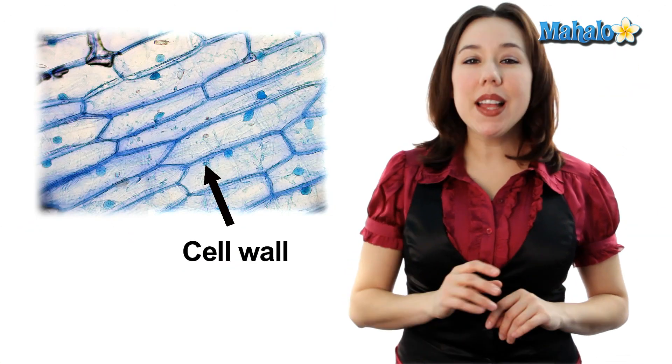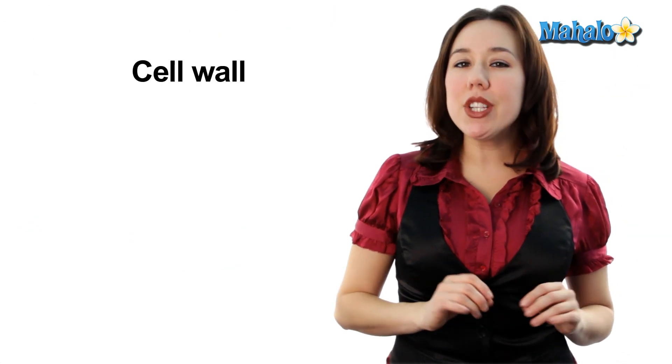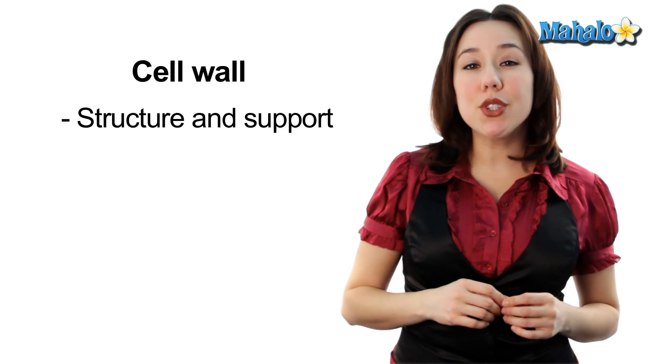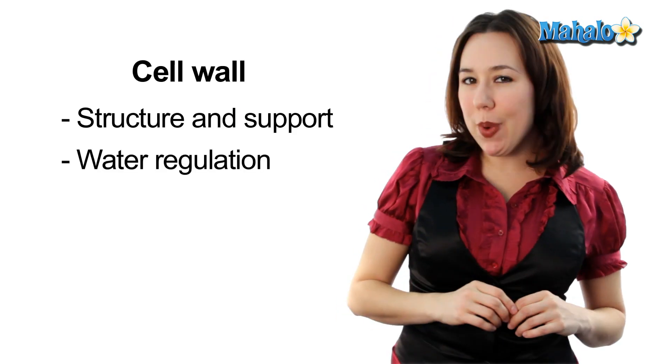Let's start with the organelles that plant cells have that you will not find in animal cells. First, plant cells have a rigid cell wall made from cellulose. This rigid cell wall helps to give the plant some structure and support, and also helps with water regulation.